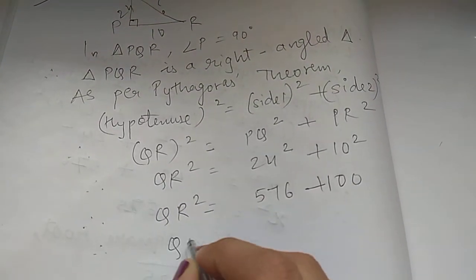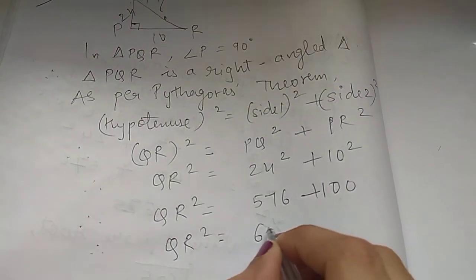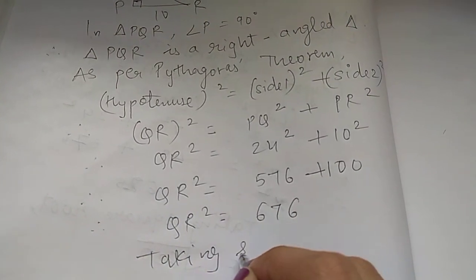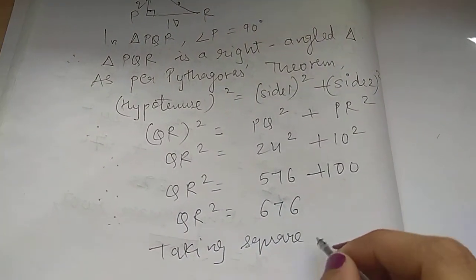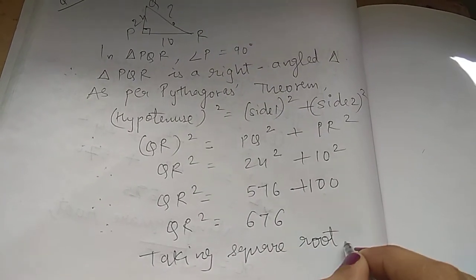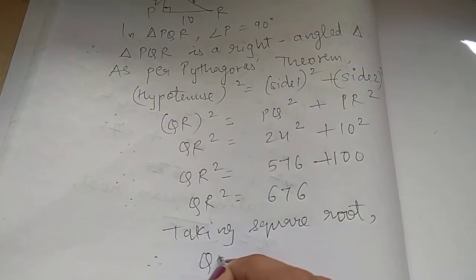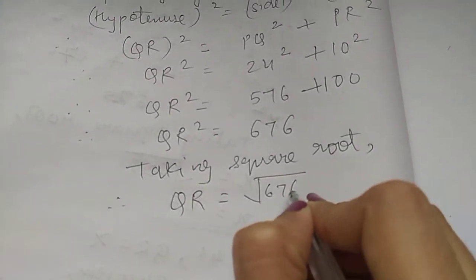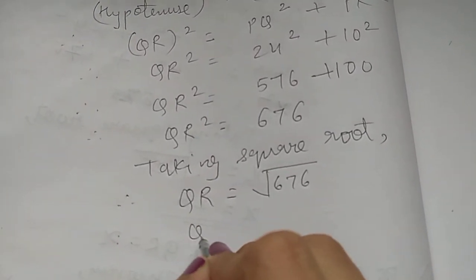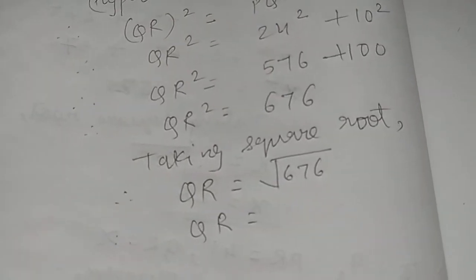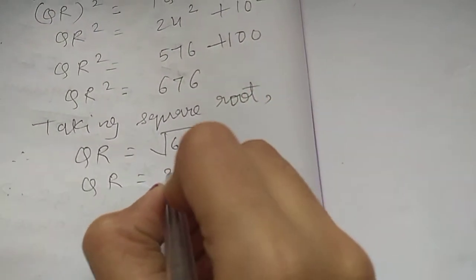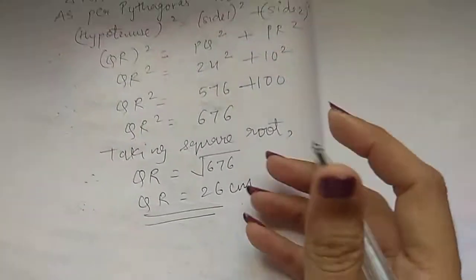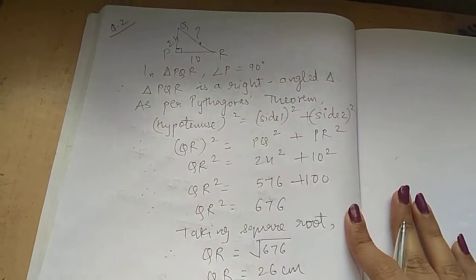So QR square equals 676. Taking the square root, QR equals the square root of 676, which is 26 cm. That is the answer for sum number 2.